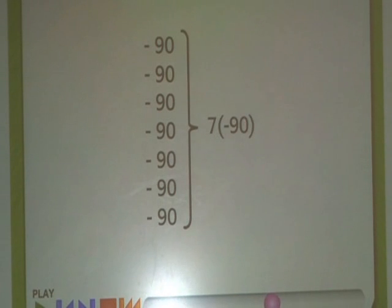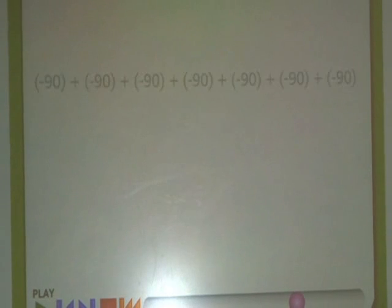If the submersible descends 90 feet per minute, then after 7 minutes, the vessel will be at 7 times negative 90. How do you know which sign to use in the answer? You can show the repeated addition on a number line.